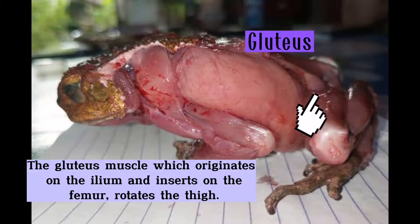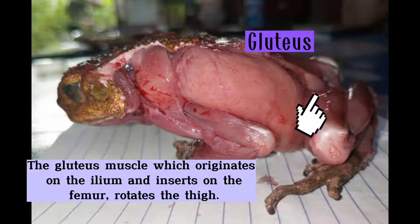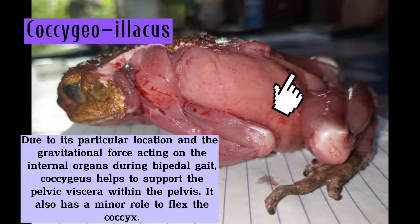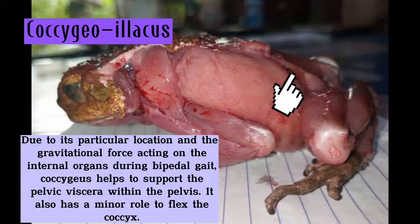The gluteus muscle, which originates on the ilium and inserts on the femur, rotates the thigh. Due to its particular location and the gravitational force acting on the internal organs during bipedal gait, the gluteus helps to support the pelvic viscera within the pelvis.